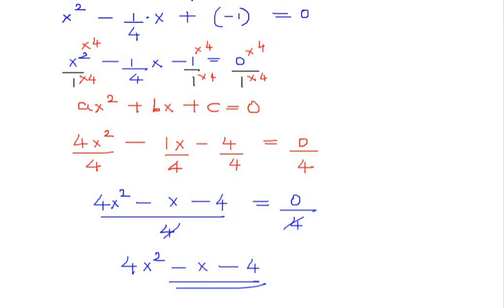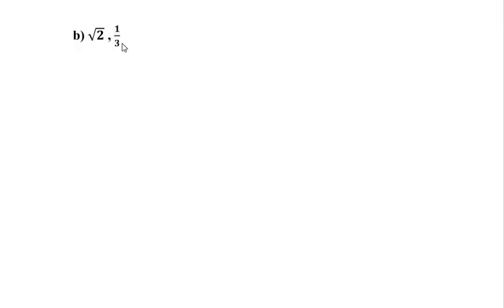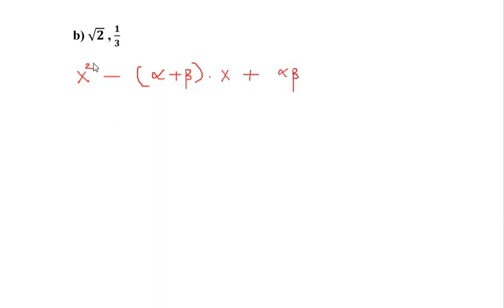Now let us look at the second part of this question: √2 and 1/3, where the sum of the zeros is √2 and product of the zeros is 1/3. Using the standard form x² - (α+β)x + αβ, we substitute to get x² - √2·x + 1/3.